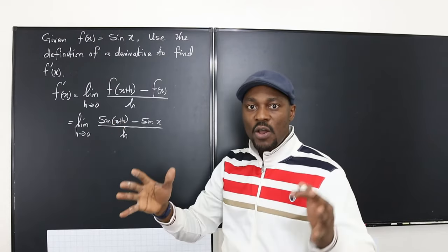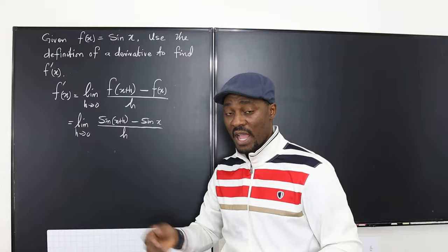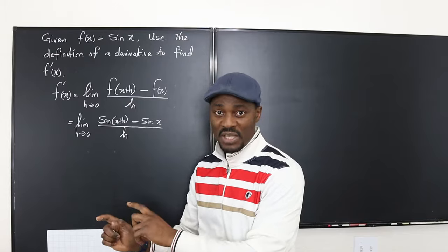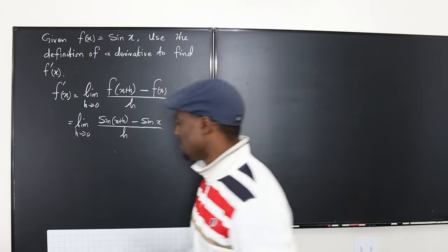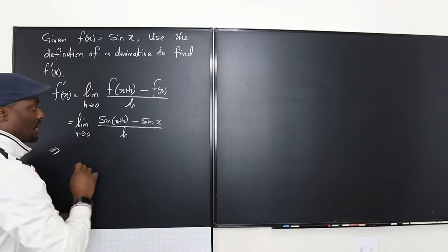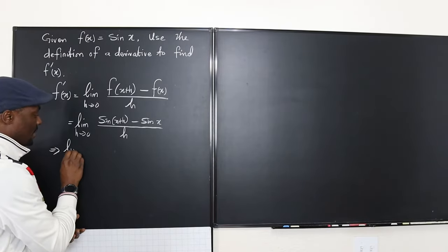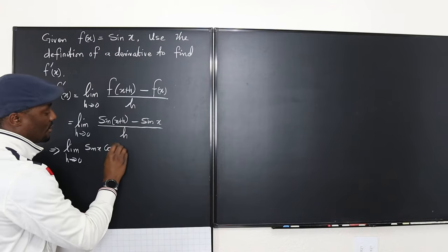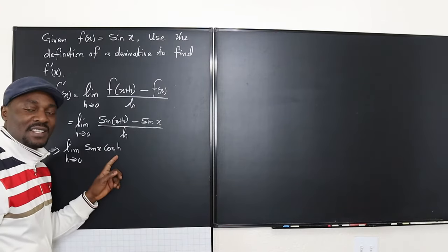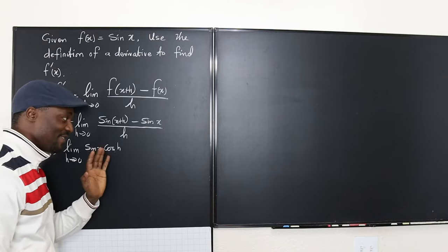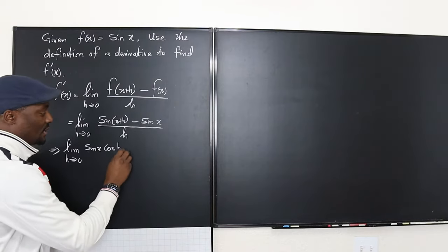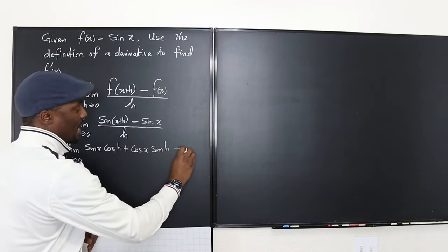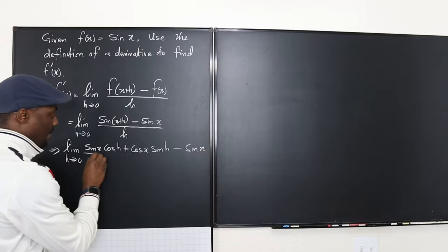There's an identity for the sine of an angle sum: sine(a + b) equals sine a cosine b plus cosine a sine b. We're going to apply that here. So this becomes the limit as h goes to 0 of sine x cosine h — don't mistake this as a hyperbolic sine — plus cosine x sine h, minus sine x, all divided by h.